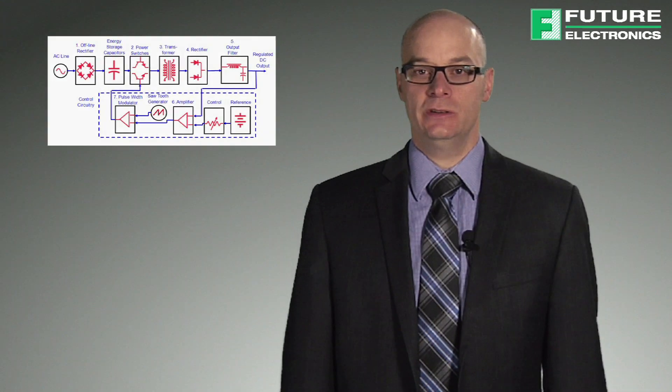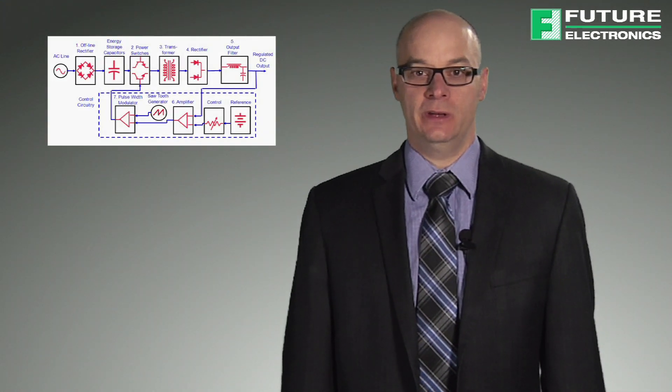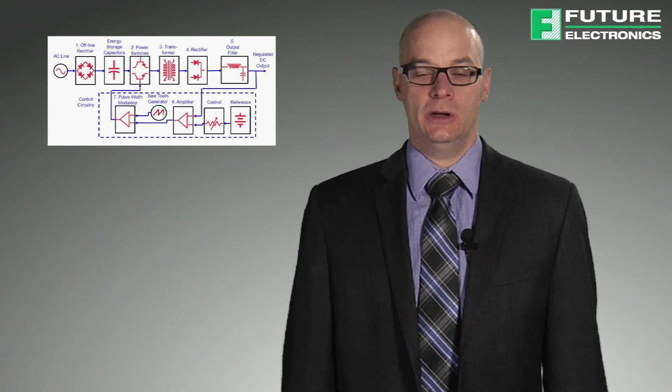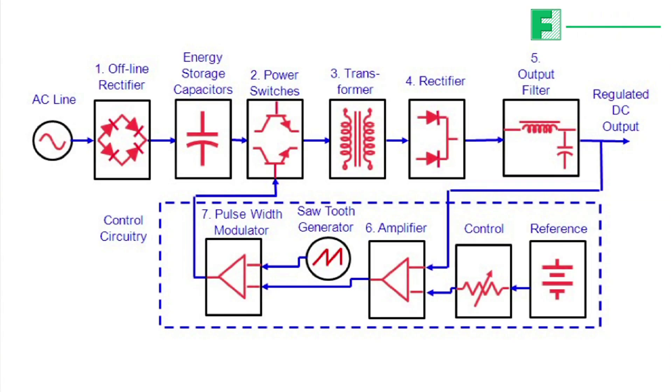This basic traditional switching power supply, illustrated here, is a bit more complex compared to the linear power supply. The AC line voltage is rectified and then filtered to provide an unregulated high voltage DC rail to power the following DC-DC inverter circuit.